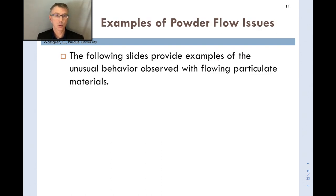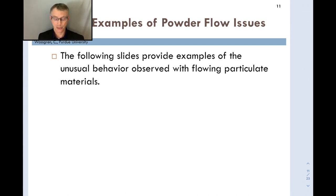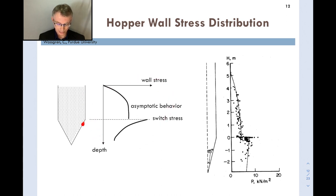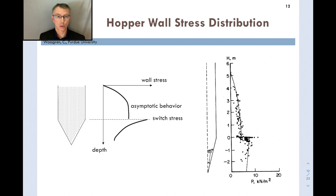What are the common powder flow issues people encounter? Consider the hopper wall stress distribution. A hopper has a cylindrical section with a conical funnel and an exit at the bottom. If you plot the normal stress on the hopper wall as a function of depth, you find the stresses reach an asymptotic (constant) value — very different from a liquid, where stress increases linearly with depth. At the transition from the cylinder into the conical section, there is a sudden jump in stress called the switch stress.